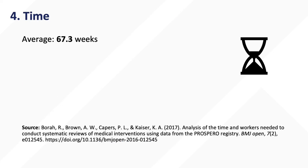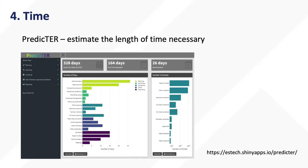The fourth requirement is time. An article in 2017 in BMJ found that 67.3 weeks is the average time for completion and publication of a systematic review. A predictor tool can help you estimate the time required for your project parameters — you will find the link in the video description.